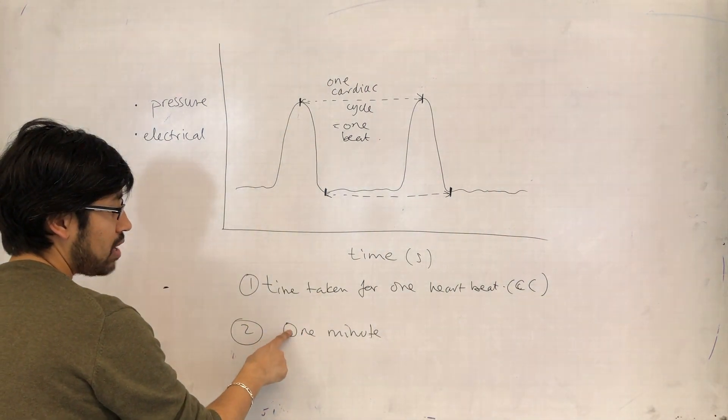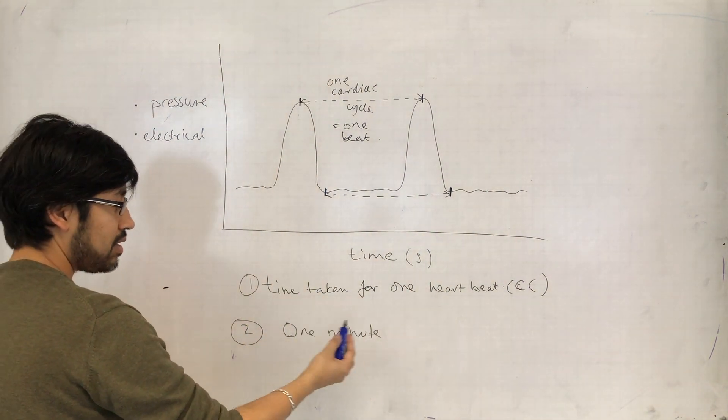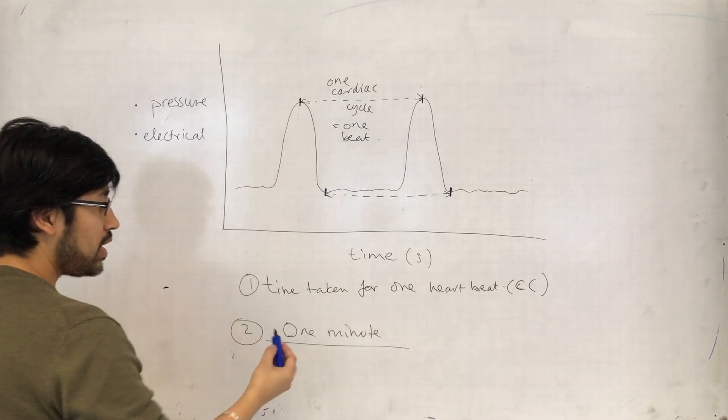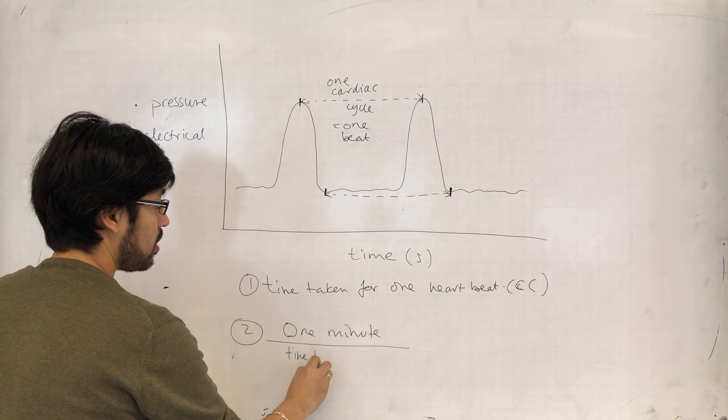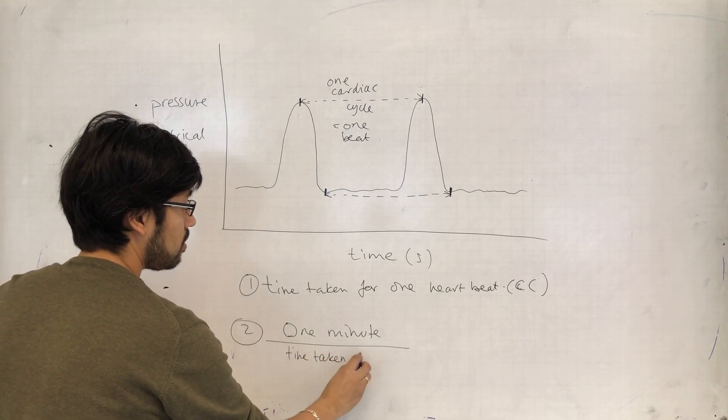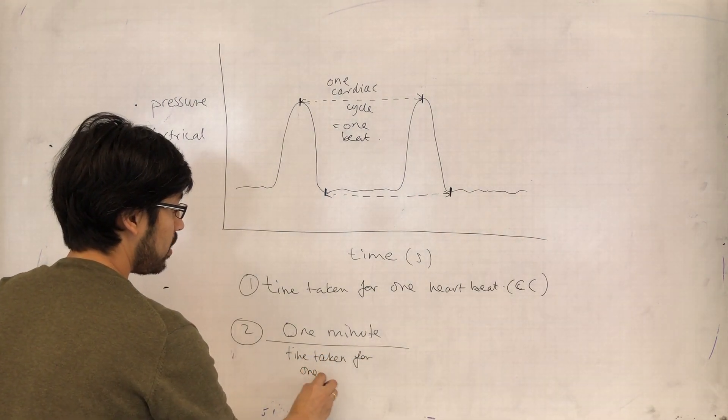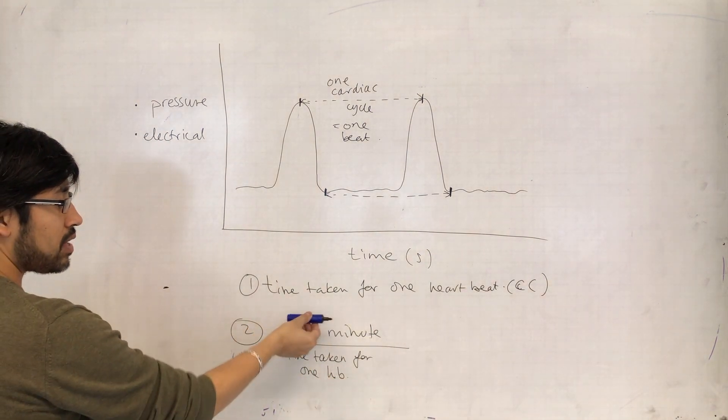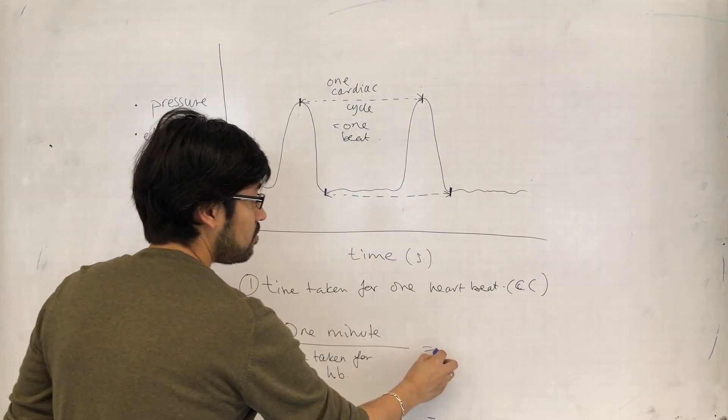If it's seconds, you'll have to use 60 seconds. If it's minutes, you'll have to use one minute divided by the time taken for one heartbeat or one cardiac cycle. So if you divide that by that, that should give you your heart rate.